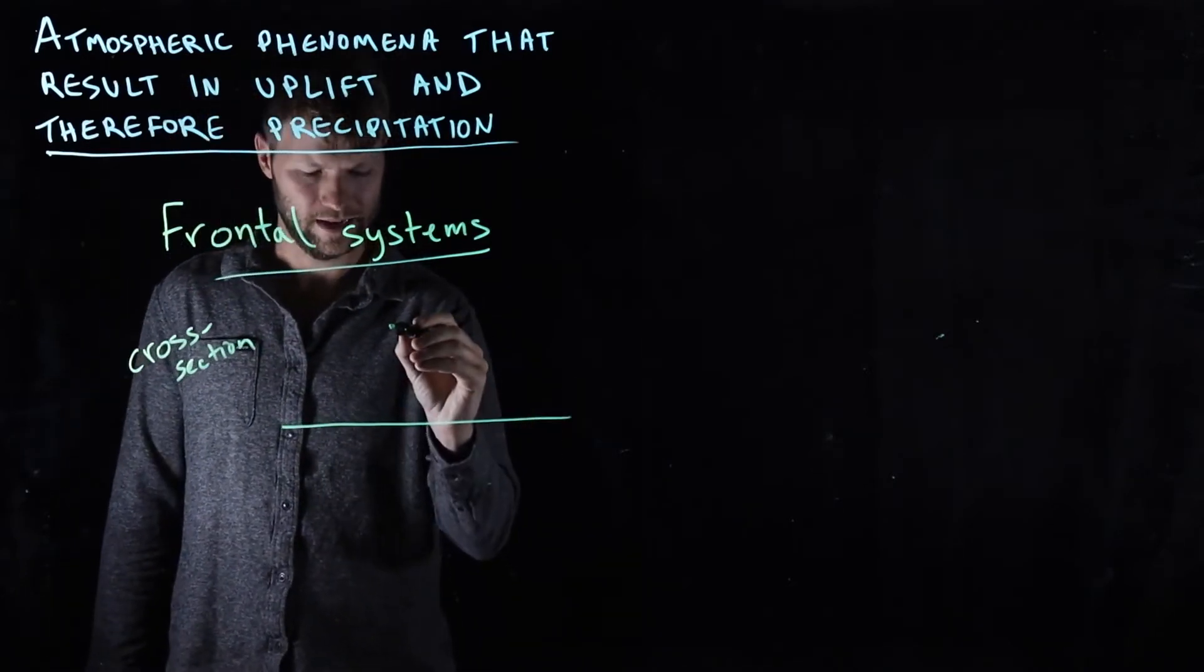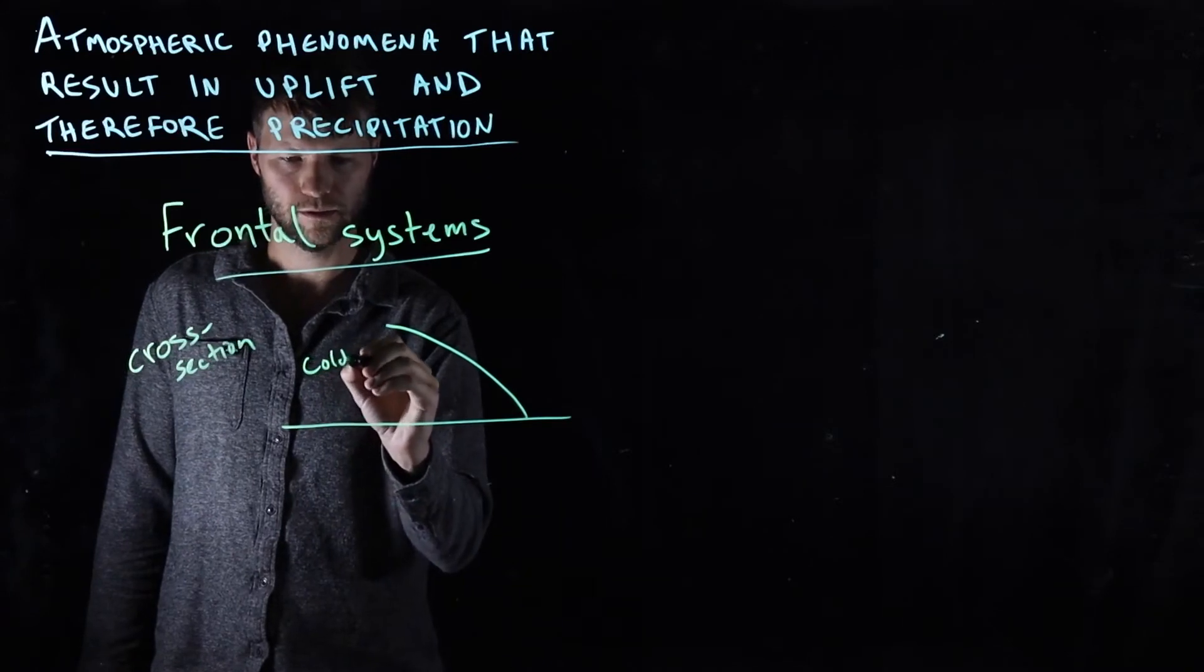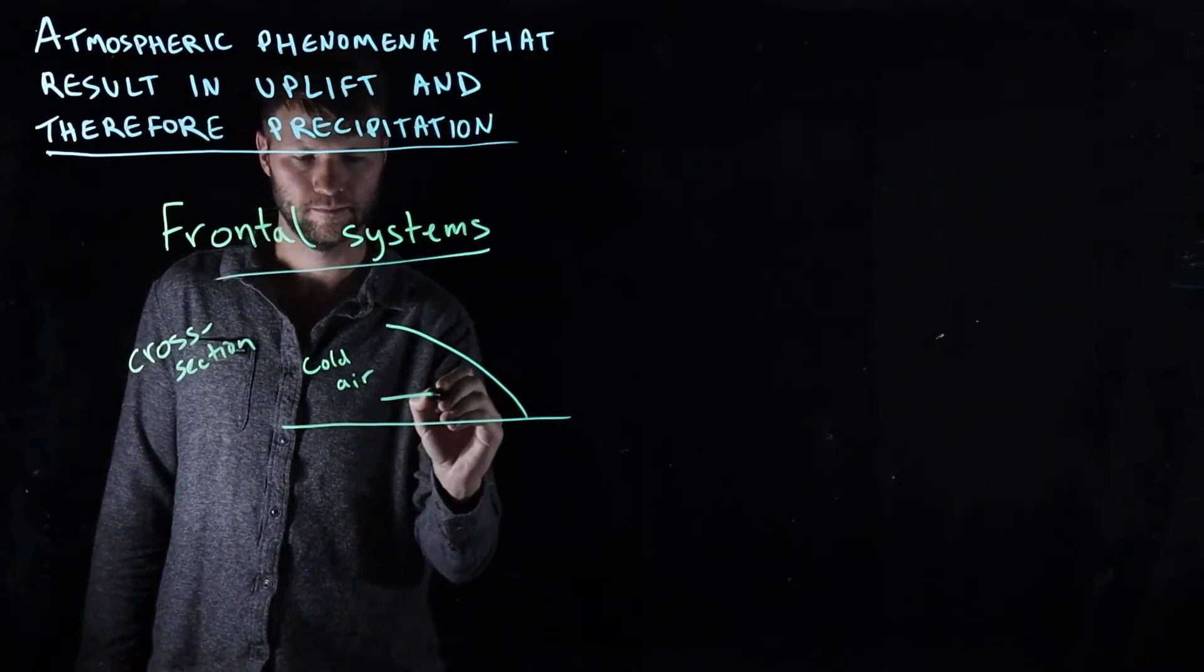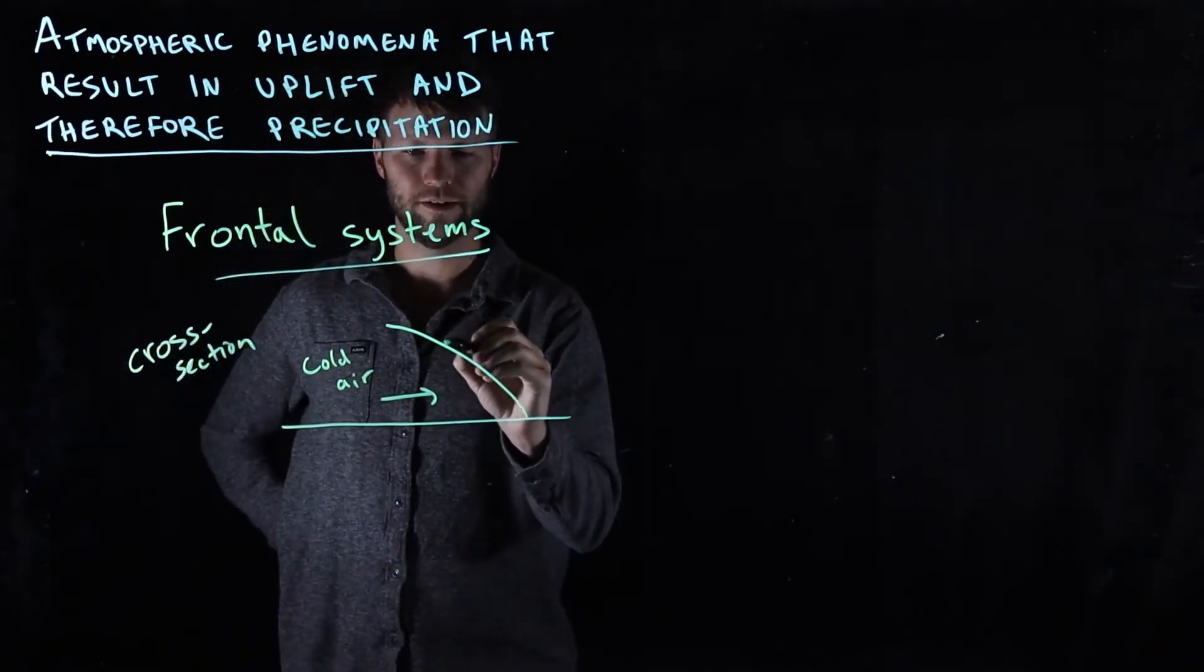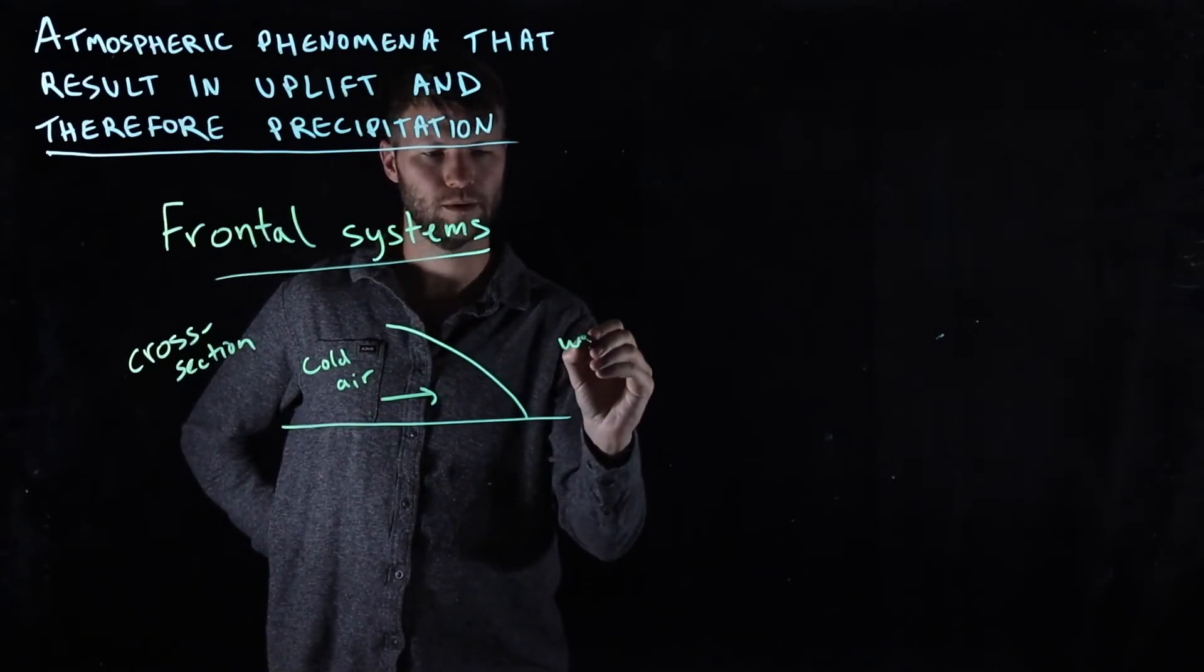Of an air mass that was moving of cold air and this boundary here was the front between this cold air mass and a warm air mass.